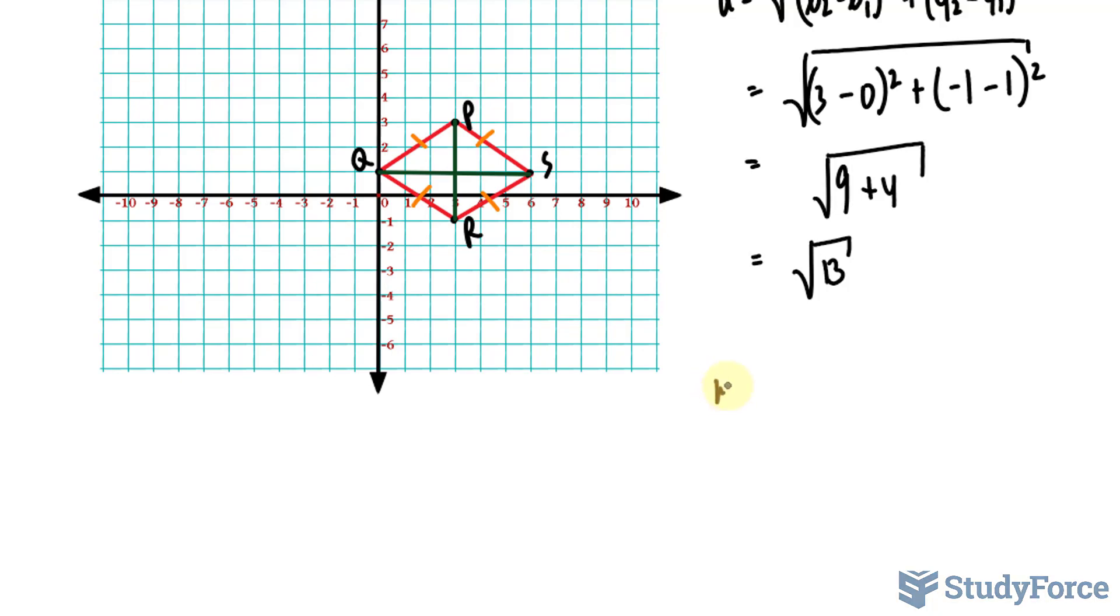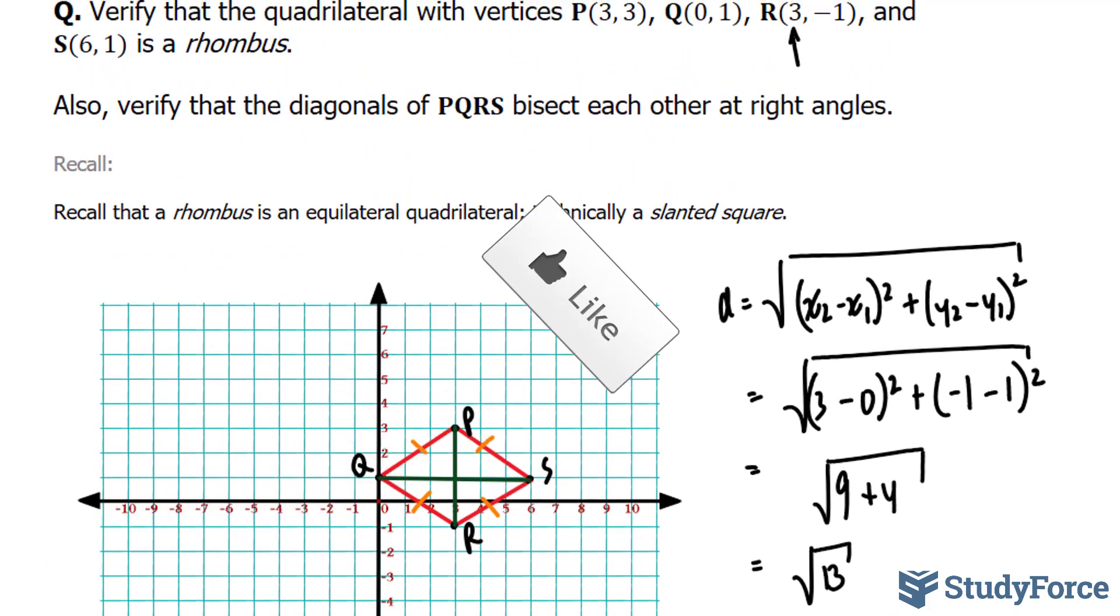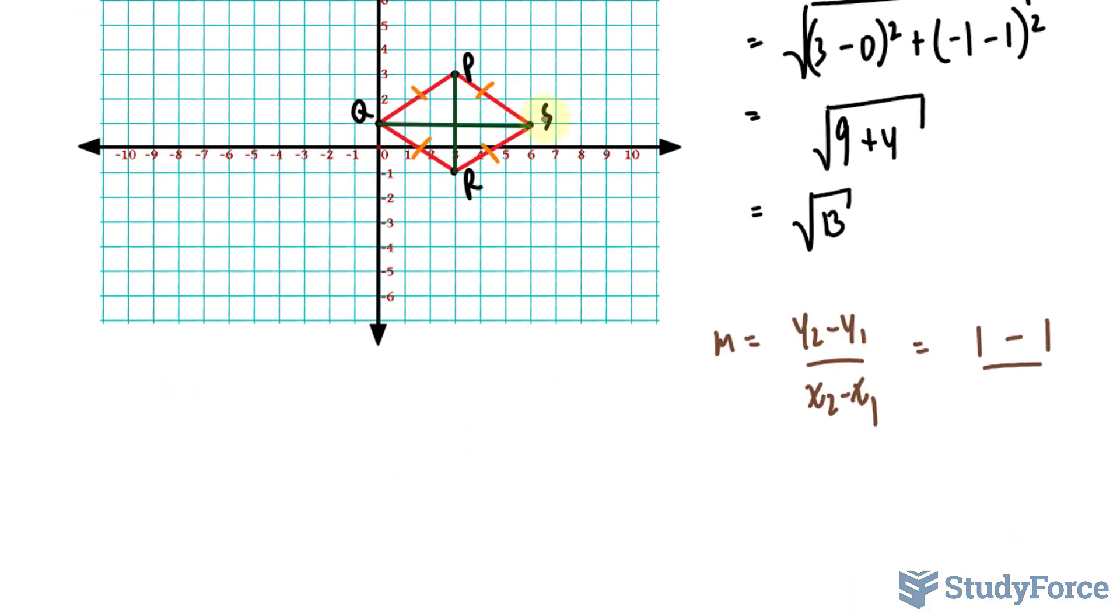Remember that the slope formula is M equals Y2 minus Y1 over X2 minus X1. Y2 will be the Y coordinate of S, and that happened to be positive 1. So we have 1 minus 1 over, and the x coordinate here was 6 minus the x coordinate here, which is 0. So we have 0 over 6. That is equal to 0. And as expected, because it is a horizontal line. Any line that's horizontal has a slope of 0.